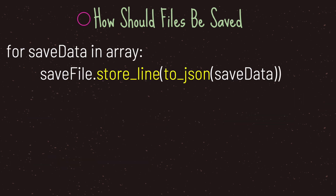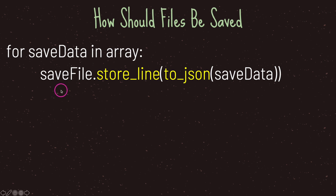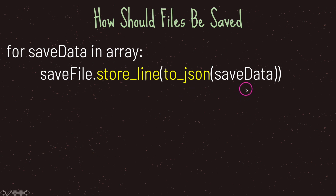Now how should files be saved? We're using a for loop to iterate — in this case we have save data in an array. This is pseudocode. We have our already-created file class instance object save_file, and we're going to use the store_line() method. We're going to use the to_json() method provided by Godot, which takes any dictionary value and converts it into JSON format, and that JSON format we are going to save line by line in our file.